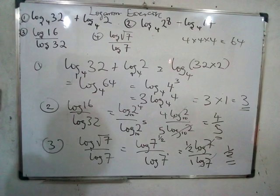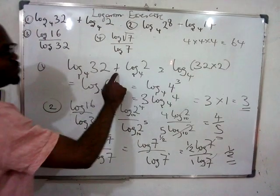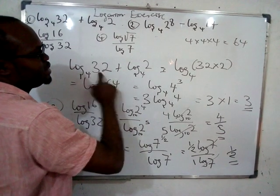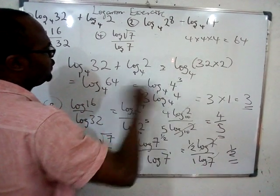That is how to solve this. You look at it very carefully. This is the addition law. Since they are of the same base, just say 32 times 2, which is 64.